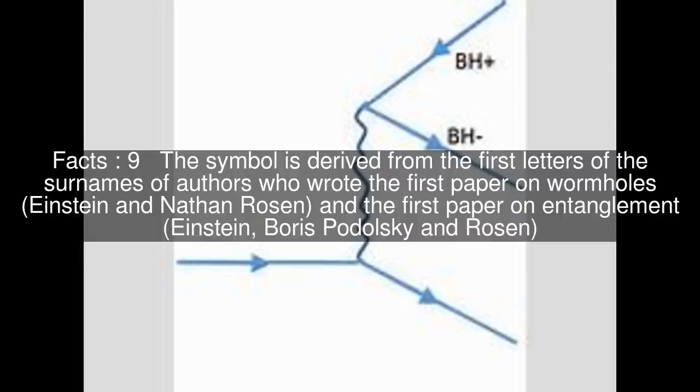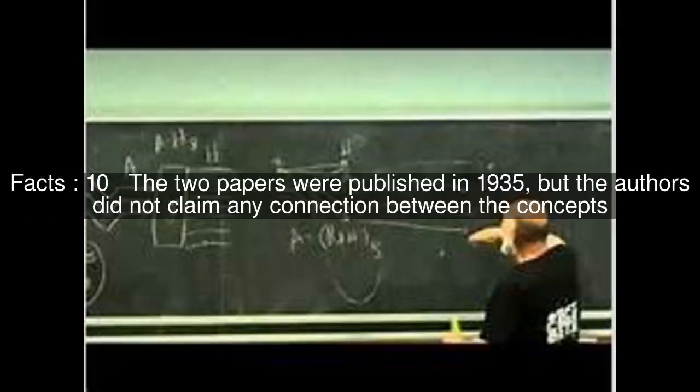The symbol is derived from the first letters of the surnames of authors who wrote the first paper on wormholes, Einstein and Nathan Rosen, and the first paper on entanglement, Einstein, Boris Podolsky, and Rosen. The two papers were published in 1935, but the authors did not claim any connection between the concepts.